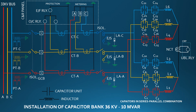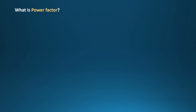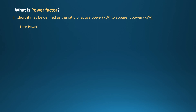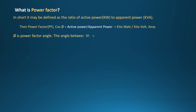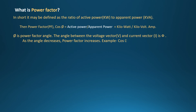Phi is the power factor angle. The angle between the voltage vector V and current vector I is phi. As the angle decreases, power factor increases. For example, cos 0 degrees is equal to 1.